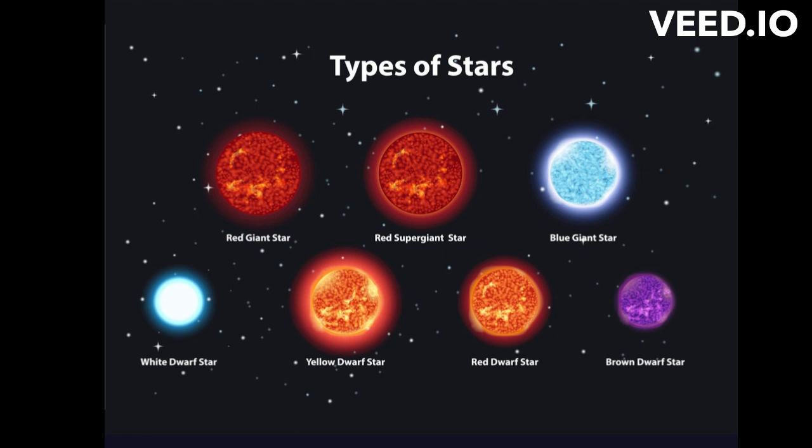Red giants are large, cool stars that have expanded as they age. Blue giants are massive, hot stars that burn through their fuel quickly. Supergiants are the largest and most luminous stars, which can be hundreds of times more massive than the sun.